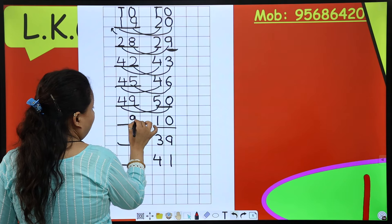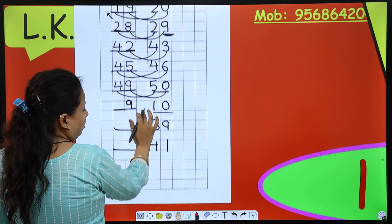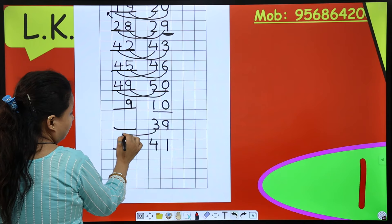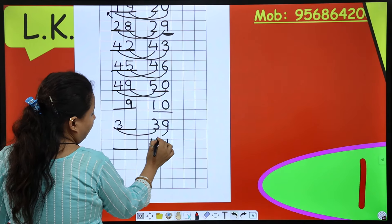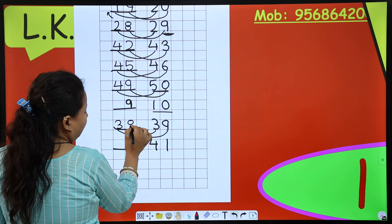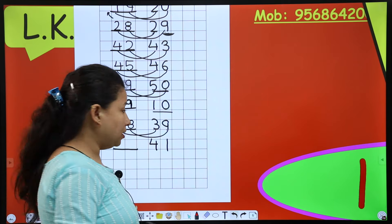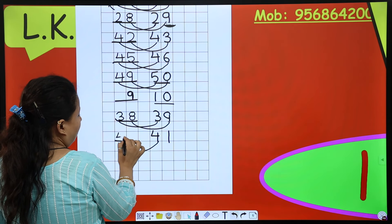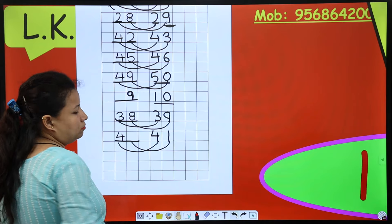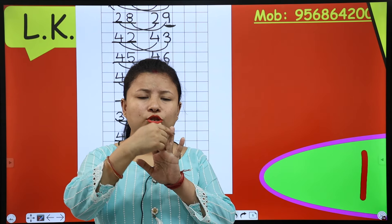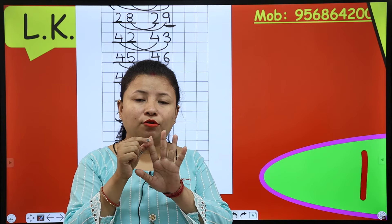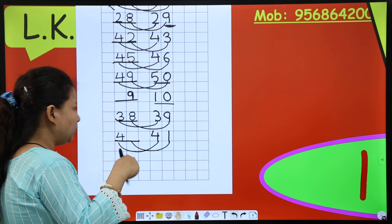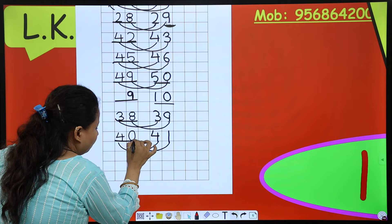9 is a single digit, so we write it on the ones line. Now next is 39 — so 3 and before 9 is 8, giving 38. And this is 41 — so 4 and before 1, counting 1, 2, 3, 4, 5 — we start from 1. Before 1 is 0, so that is 40.